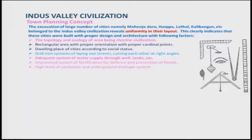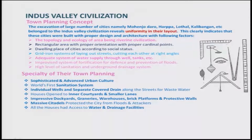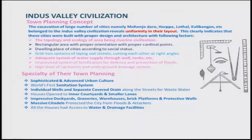High levels of sanitation and underground drainage systems were found at excavation sites of the Indus Valley Civilization. The civilization is claimed to have had the world's first sanitation system, with individual wells and separate covered drainage over the streets for waste water. Today we see that several drains in our country do not have proper covers. Houses opened to inner courtyards and smaller lanes, and there were impressive dockyards, granaries, warehouses, brick platforms, and protective walls.